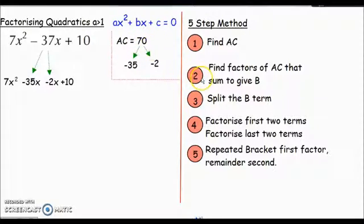We're over halfway here. We've done step 1: find AC, that was 70. Step 2: find the factors of AC that give B—we did that, -35 and -2. Step 3: split the B term up into these two factors. We rewrote the quadratic with the two new factors. Step 4 says factorize the first two terms—I've got four terms here—factorize the first two together, then factorize the second two together.